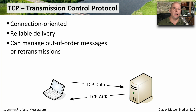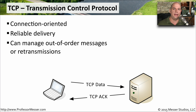Because TCP is keeping track of what is sent and in what order, anything that is received out of order on the other side can be pieced back together in its correct form. This commonly happens on modern networks — information is sent out in one particular order, but because of the way traffic flows, those frames may arrive out of order. TCP can handle that. If anything is missing, it will ask for retransmissions and put everything back together in its original form.